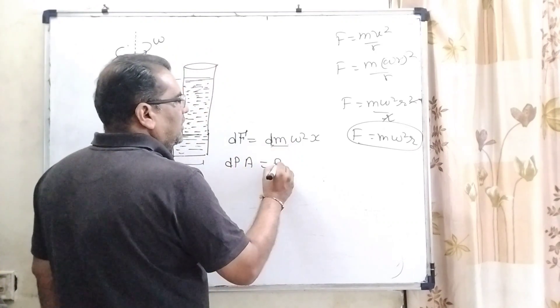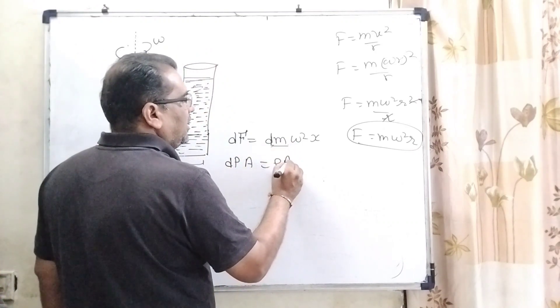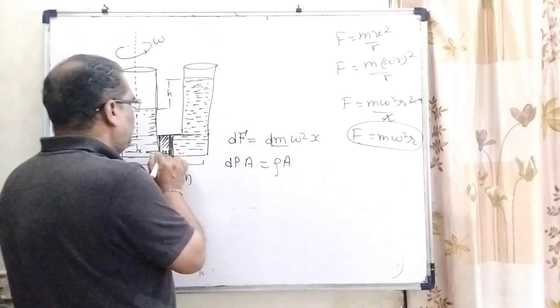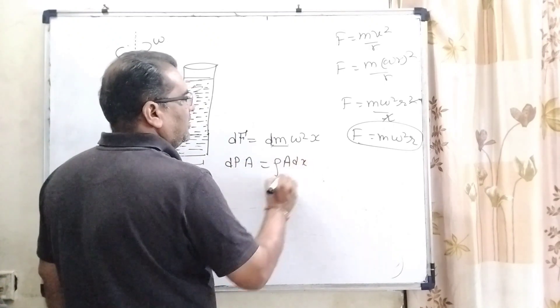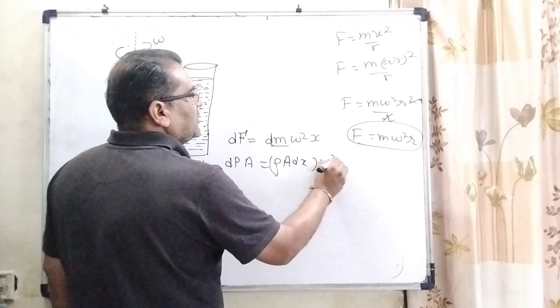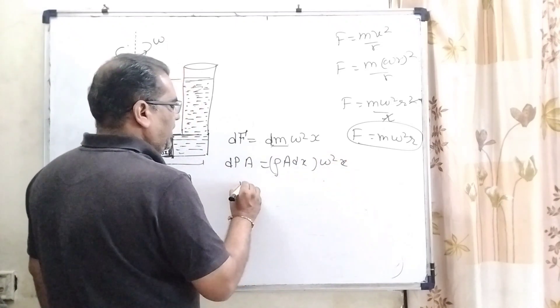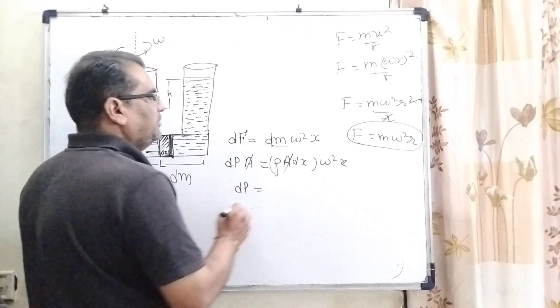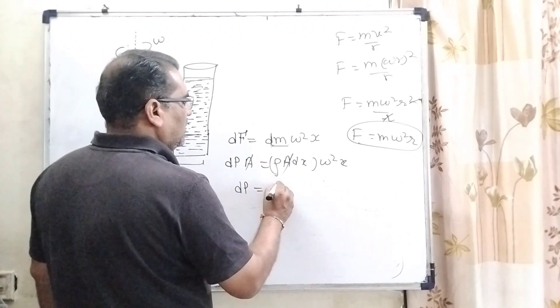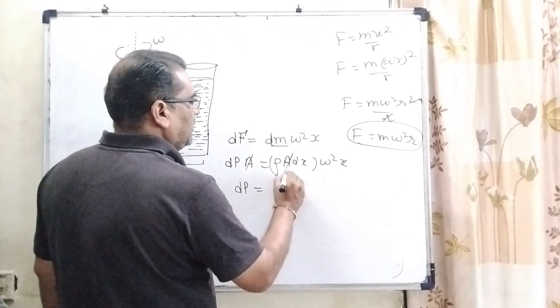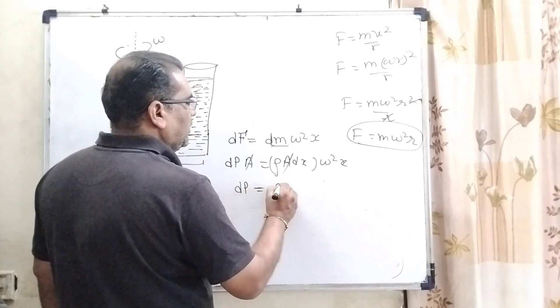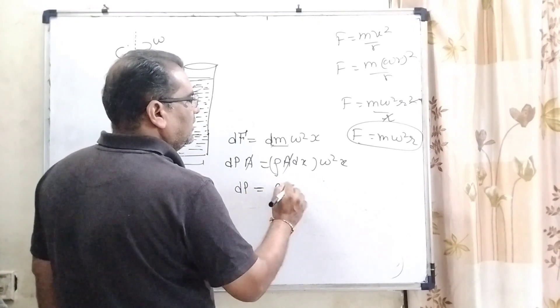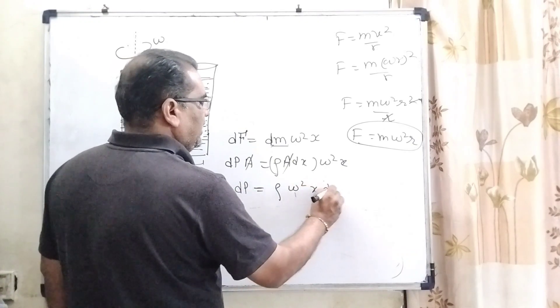Omega square x - then dP equals, here A cancels out, then pressure dP equals rho omega square x dx.